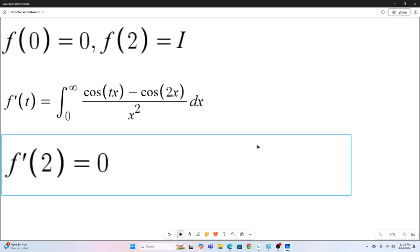And now we'll say that F prime of two is equal to zero, which it is. We just have cosine two minus cosine, or cosine two X minus cosine two X. That's what we get. So F prime of two is zero.